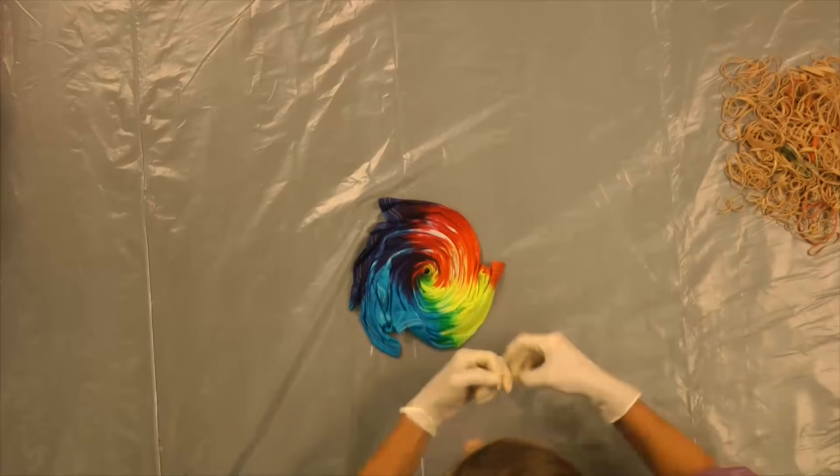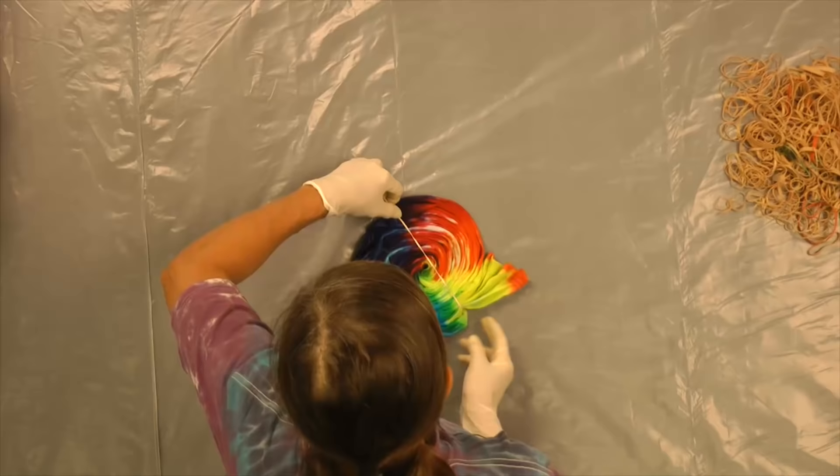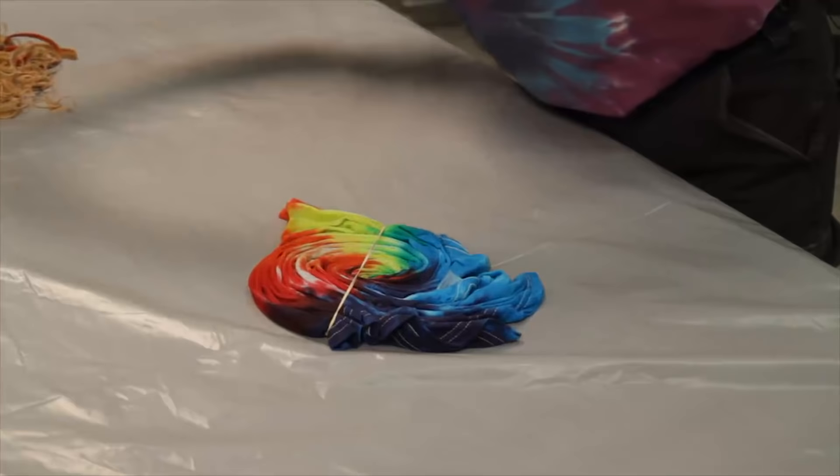Get it round. Now, the trick to putting the rubber bands on is to leave the shirt flat on the table and slide your rubber bands on. That's why you need a slippery surface.